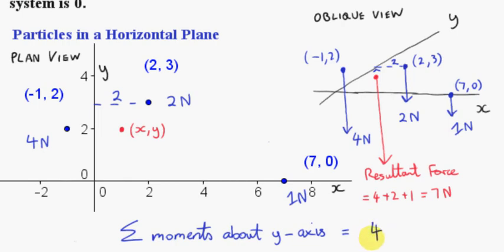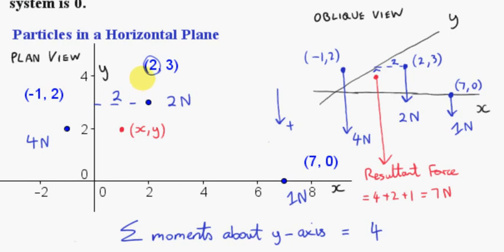What about the sign? It depends on which side of the y-axis the force is acting. If it's acting on one side, it has one sign. It's a bit easier to take this to be positive, consistent with the fact that the sign of the x value is positive. As for the force, it's pointing downwards. In this type of question it's a bit easier to take the downwards forces as being positive. So all we have to do is look at the sign of the x value and multiply by the downwards force. So we get 2 by 2, which is 4.